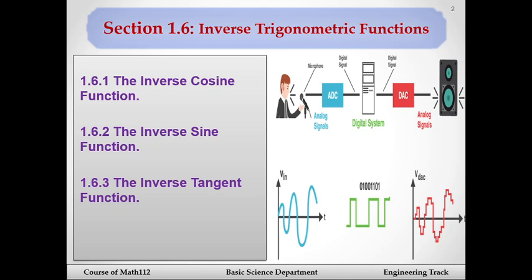Now we will look at the inverse trigonometric functions. The first one is the inverse cosine function, and the others are the inverse sine function and the inverse tangent function. In a similar way we can find the others as well, like inverse cosecant, inverse cotangent, or inverse secant, but now we want to focus on only three of them.